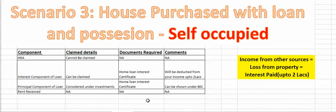Scenario 3 is if you are living in the house yourself. In this case, you cannot claim HRA. You can still claim the interest component the same way. And since you haven't given the house on rent, there is no concept of rent income here.